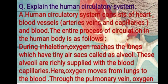Next, a very important question: explain the human circulatory system. The human circulatory system consists of the heart, blood vessels such as arteries, veins, and capillaries, and the blood. During inhalation, oxygen reaches the lungs, which have tiny air sacs called alveoli. These alveoli are richly supplied with blood capillaries.